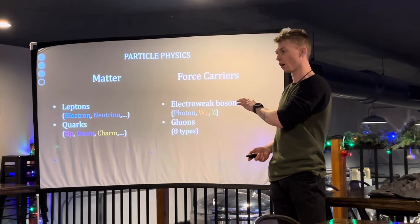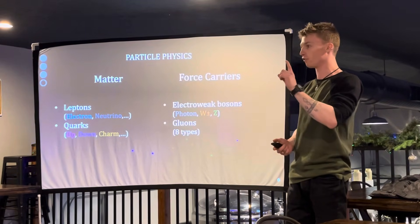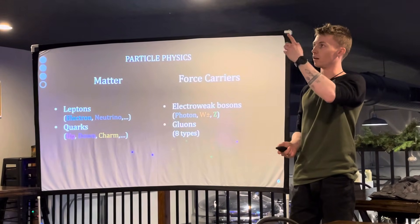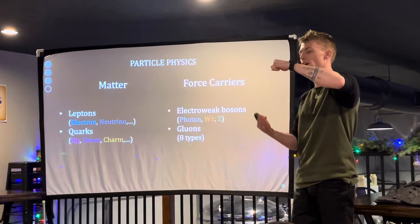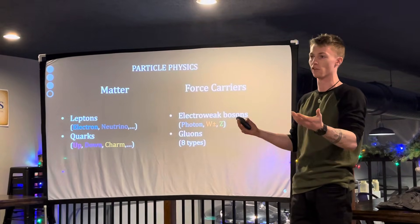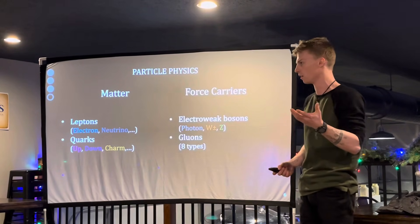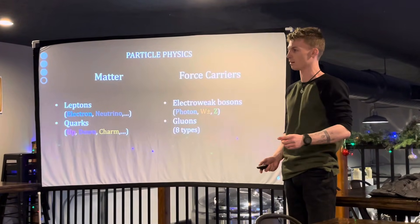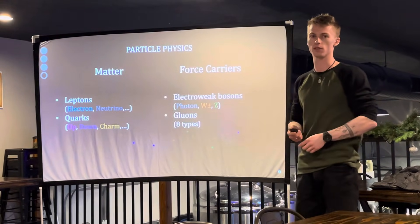Gluons are the mediators for the strong force. For the electroweak bosons, we have four. There is the photon, which is the most familiar. All of these lights are LED: you have an electron in a low energy state, electricity raises it to a high energy state, it falls down and releases a photon. That photon bounces off the surface, loses energy, your eye picks it up, and sees that energy. So you should be very familiar with what a photon is, because you're seeing them all the time. The W-plus, W-minus, and Z bosons are other bosons you will never see.